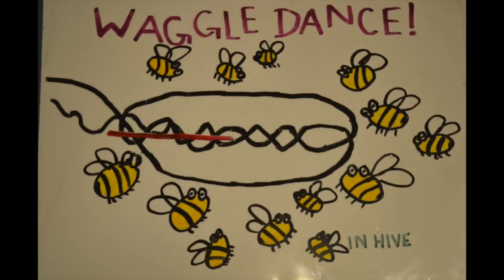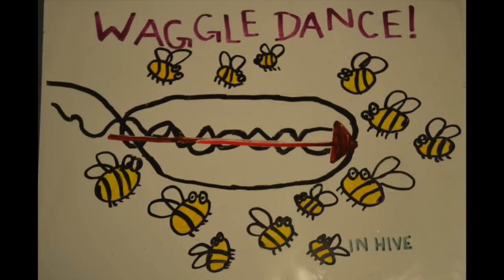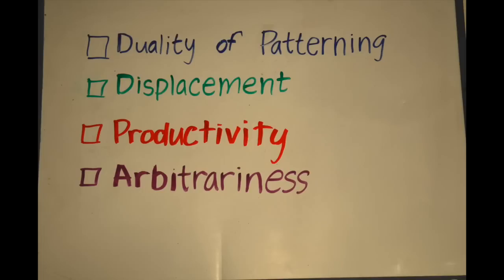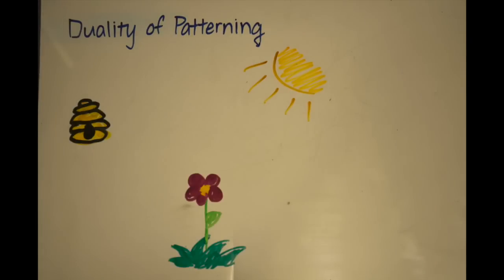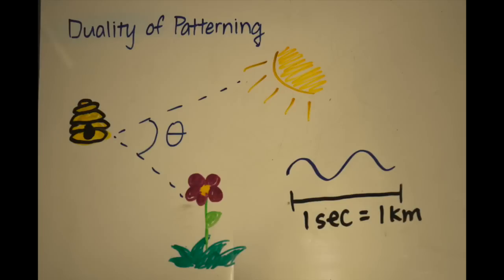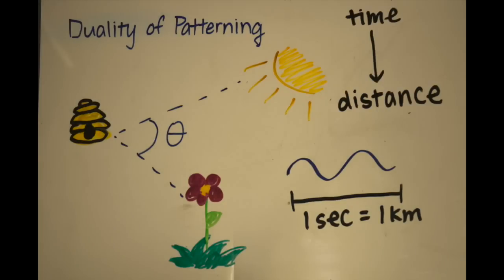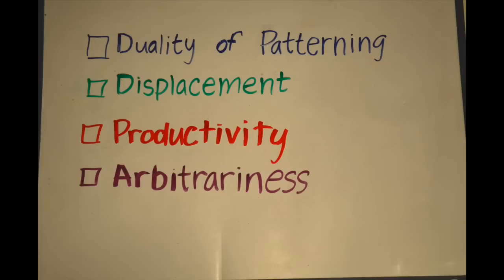This waggling has directionality. Now let's compare bee communication to the four design features of language. Each part of the waggling dance has its own meaning. For example, the angle they dance at represents the angle between the sun, the hive, and the food source. And every second that they perform the dance represents the number of kilometers away that the food is.